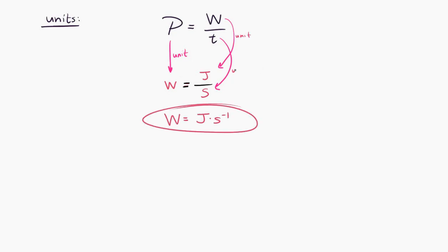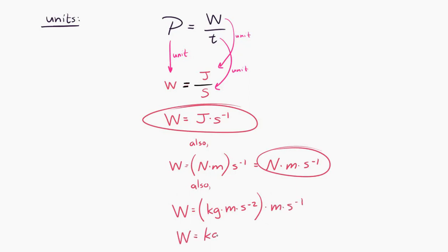And if we wanted to go even further, we know that a joule is a newton times a meter. So that means a watt is a newton times a meter per second. And going even further, a newton is a kilogram meter per second squared. So a watt is a kilogram meter per second squared times a meter per second. And if we simplify that, a watt, in terms of fundamental units, is a kilogram meter squared per second cubed.